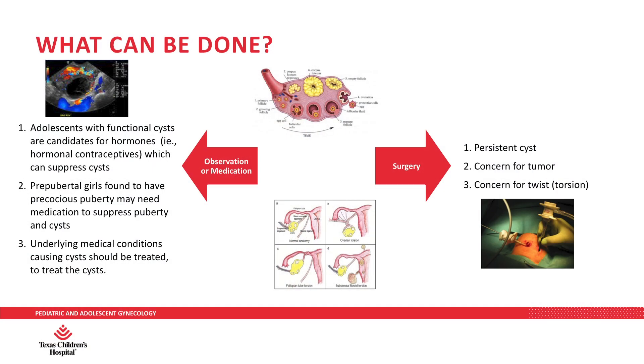In general, when managing an ovarian cyst, if we move into the category of observation or medication: adolescents with functional cysts are candidates for hormones, such as a hormonal contraceptive, which can suppress cysts over time — particularly those that are functional and causing abdominal pain. Prepubertal girls would not use these types of hormones; they might instead be found to have a precocious puberty cause or a thyroid cause, and we need to choose the right medication to suppress puberty and cyst development. Underlying medical conditions such as hypothyroidism can also be treated — adding thyroid hormone back to the body will help suppress cyst formation.